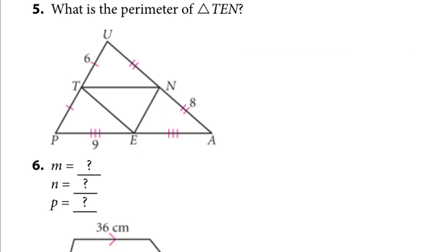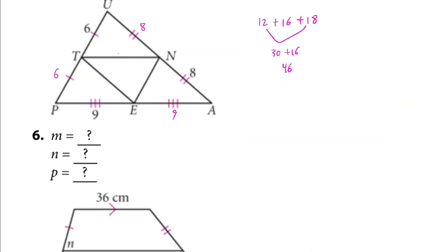Okay, what is the perimeter of TEN? Well, these are all midpoints. So I just added the rest. So that's 12 plus 16 plus 18. These make 30 plus 16. So that's 46.